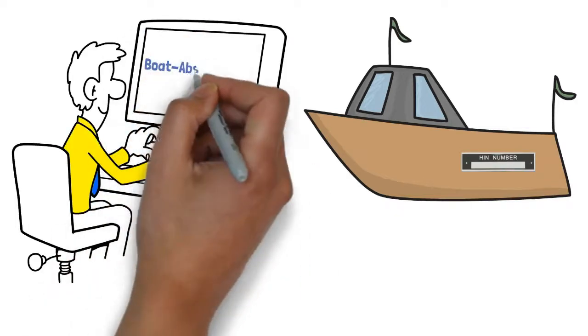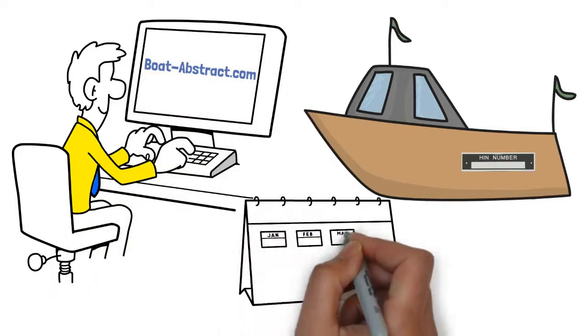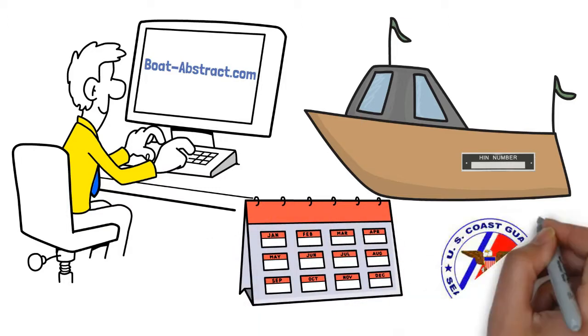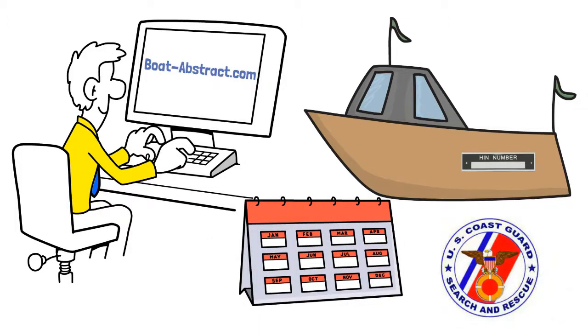Use the boat-abstract.com website to find the ownership history in the abstract of the title using the US Coast Guard official number if you have one.